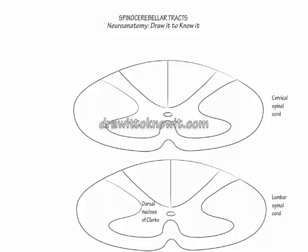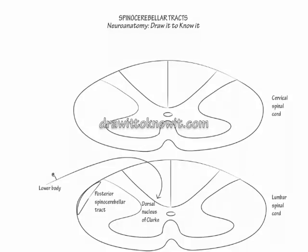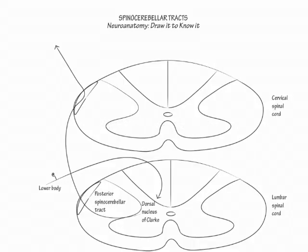The dorsal nucleus of Clark spans from L2 up to T1. Then along the posterior lateral wall of the spinal cord, label the posterior spinal cerebellar tract. Show that inputs from the lower body pass into the posterior column and travel up to the L2 level where they synapse in the dorsal nucleus of Clark. Then show them pass within the posterior spinal cerebellar tract up the length of the spinal cord through the ipsilateral inferior cerebellar peduncle to enter the cerebellum.